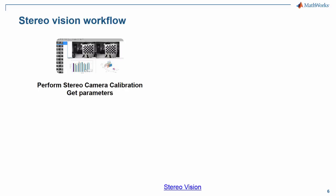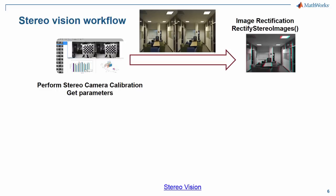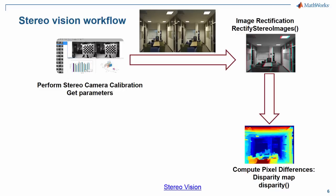Once you calibrate those cameras, you need to get some parameters describing how one camera is looking at a particular object with respect to the other — those parameters need to be extracted. Once the camera is calibrated, start the live acquisition of the scene. Apply those parameters to the scene and rectify for any errors. Once you undistort those images by applying those parameters, you want to calculate something called a disparity map — the pixel differences, i.e. the difference between the views of those cameras to a specific object.